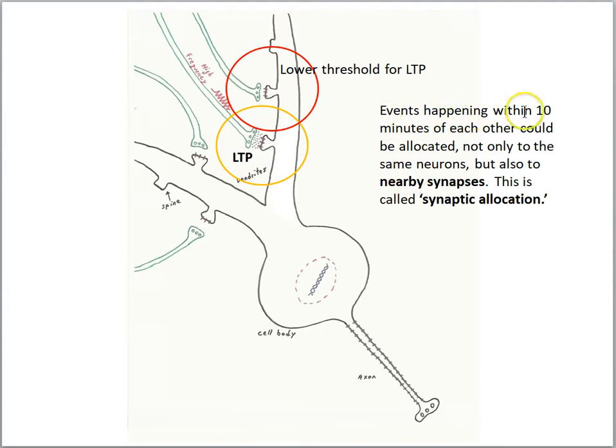What this means is events happening within 10 minutes of each other could be allocated not only to the same neurons, but also to nearby synapses. This is called synaptic allocation.